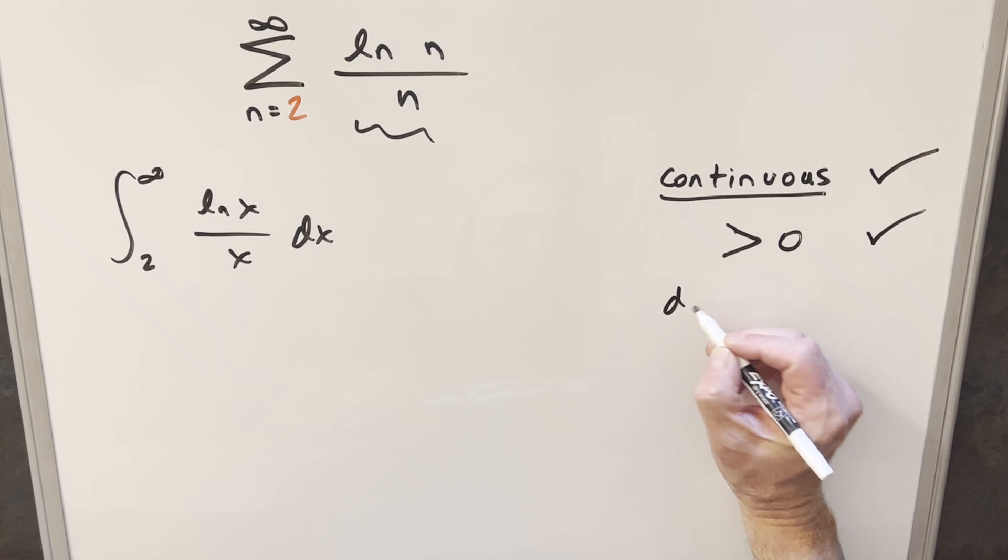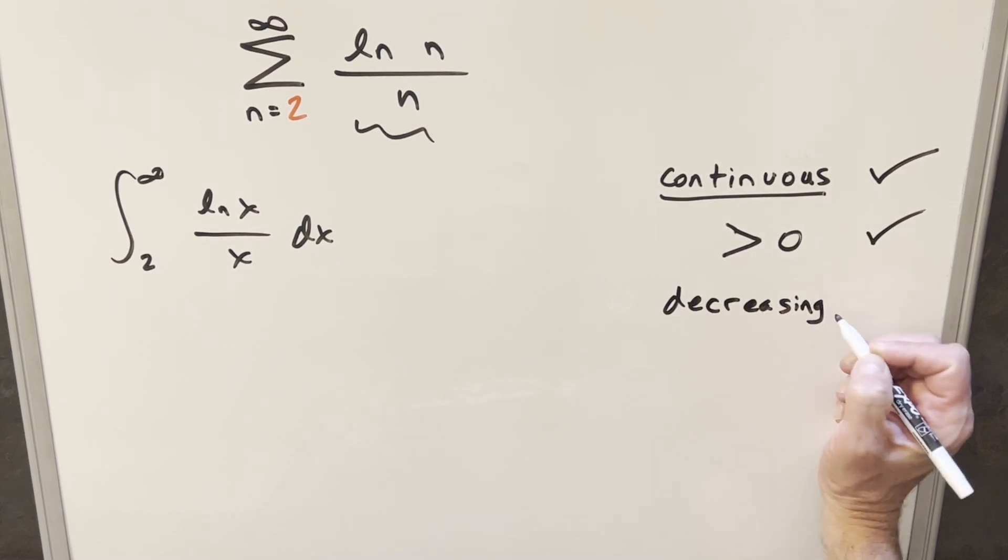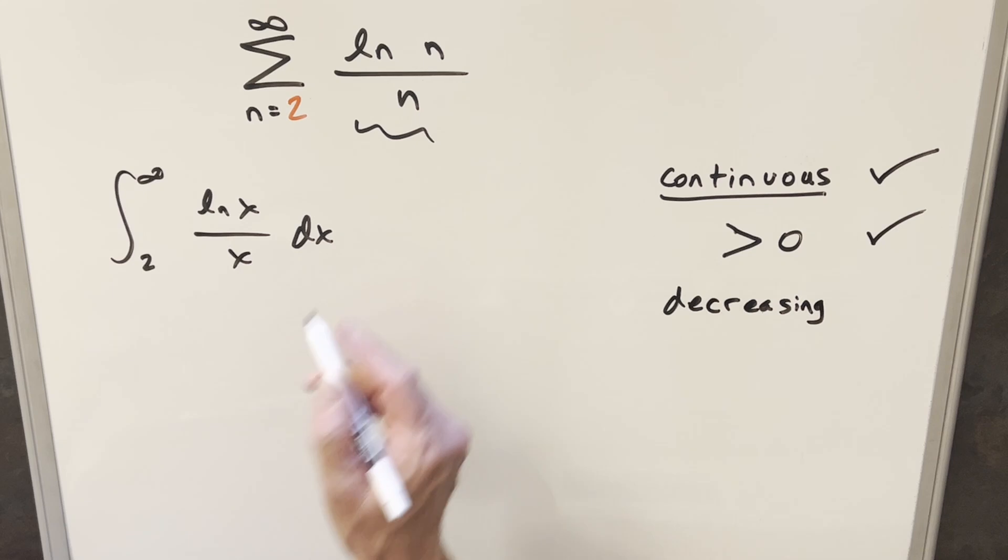Last check, is this thing going to be decreasing for all of our n values? Now that's kind of interesting because it is kind of close. If we first look at the 2 value, looking at a graph, it's definitely going to be decreasing for like larger n values. The interesting thing is when we look at smaller n values, like when we just look at 2,